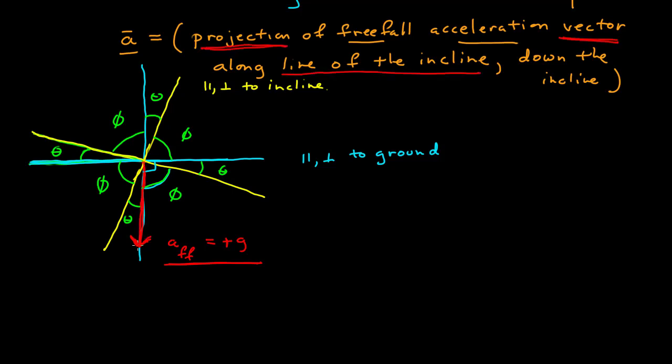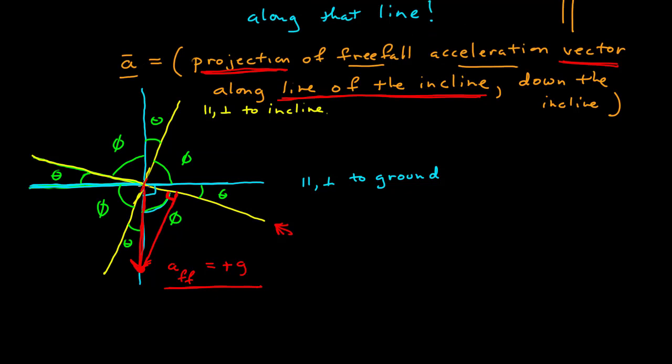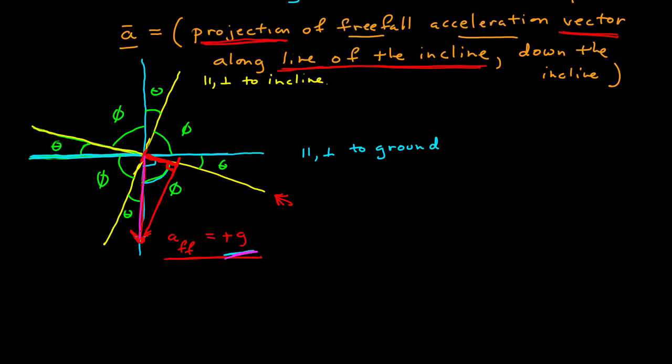To do a projection, I start at the tip of the acceleration vector and draw a line that's perpendicular to the line on which I want the projection. The projection is simply the length from the tail of the vector to where the line meets. So now I need to calculate what that is. The length of that vector, which corresponds to the magnitude, is g.